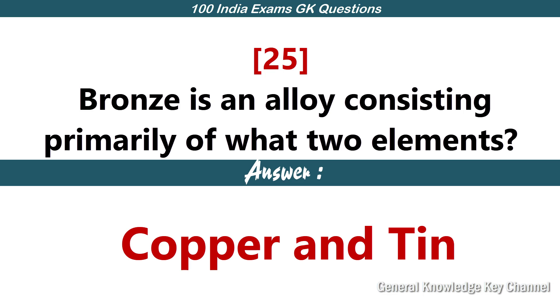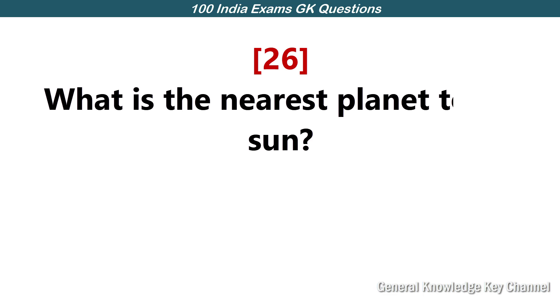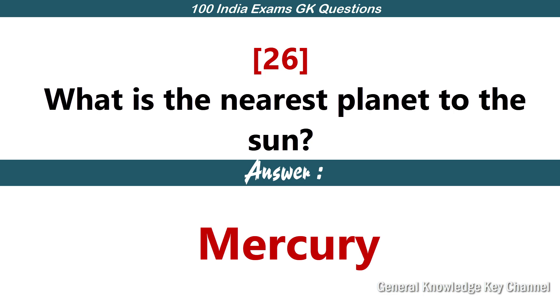Bronze is an alloy consisting primarily of what two elements? Answer: Copper and Tin. What is the nearest planet to the Sun? Answer: Mercury.